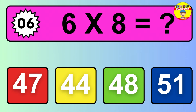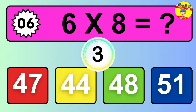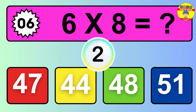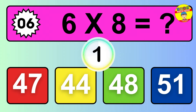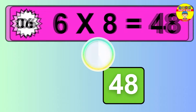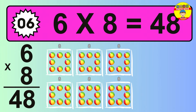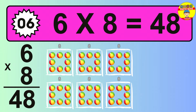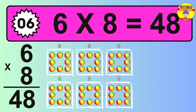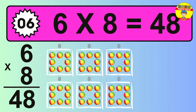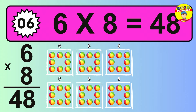Question 6. 6 times 8 equals what? The answer is 6 times 8 is 48. To calculate, we have 6 groups with 8 balls each one. So, how many balls do we have? 48 balls.